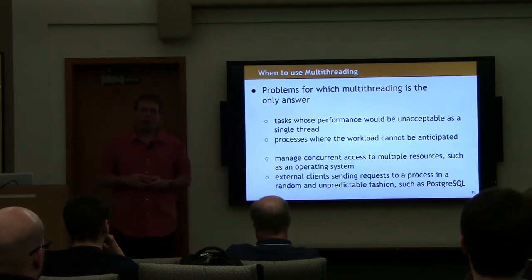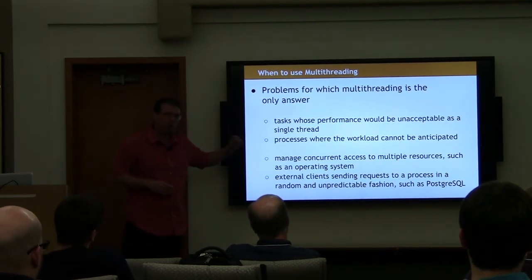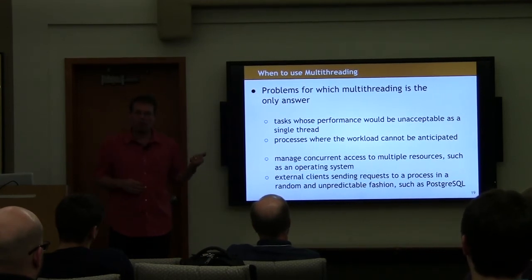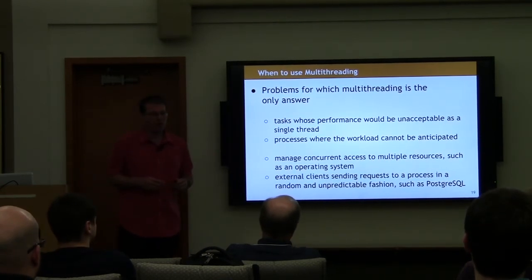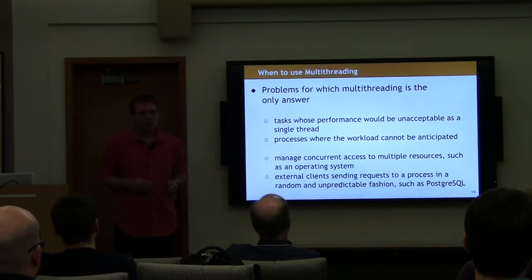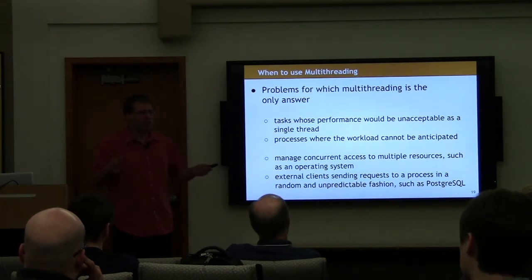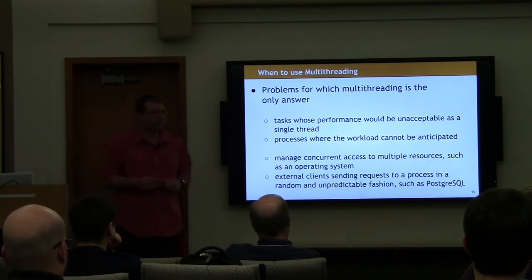There's another kind of problem — those for which you have to use multi-threading even though it's difficult and not a good solution. The main thing to look out for is tasks whose performance does not work as a single-threaded application: if you cannot meet your performance targets with a single thread, you have to solve the problem using multiple threads. You could consider multiple processes, but that can sometimes be awkward later in the architecture process because you didn't define the interfaces between your processes richly enough.